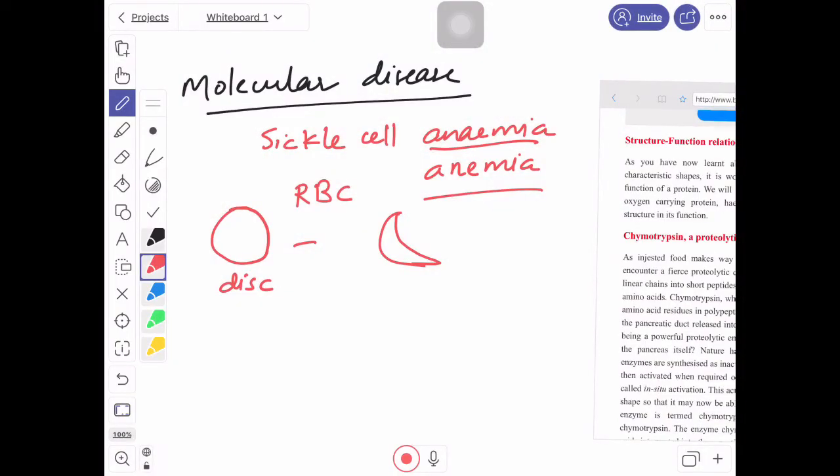Okay, today's topic is molecular disease, sickle cell anemia. Sickle cell anemia is a disease which results in the sickling of red blood cells.